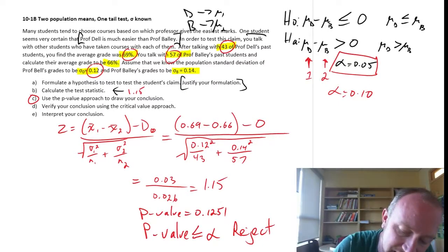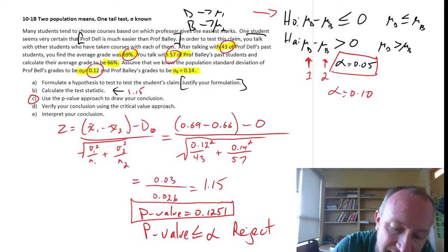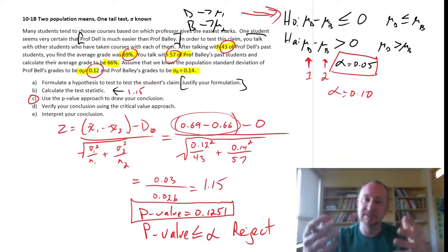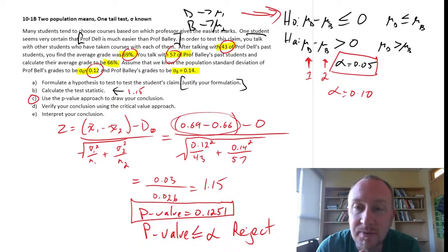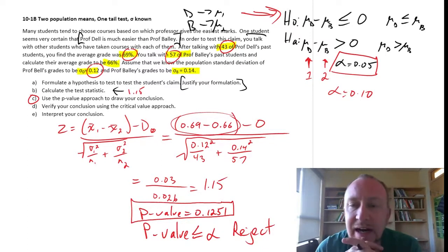So in this case, we don't have sufficient evidence. Meaning that if the null hypothesis is true, the possibility of obtaining that test statistic, those sample values from that distribution, it's sufficiently high that I am not comfortable rejecting it. It's possible that that sample came from that distribution. The probability of that occurring is sufficiently high that if I reject it, my exposure to a type 1 error is greater than what I am comfortable with. So I am not going to reject that null hypothesis. So I cannot support this student's claim that there is a statistical difference between the two, or at least that Professor Dell's average grade is statistically greater than that of Professor Bailey's grade.